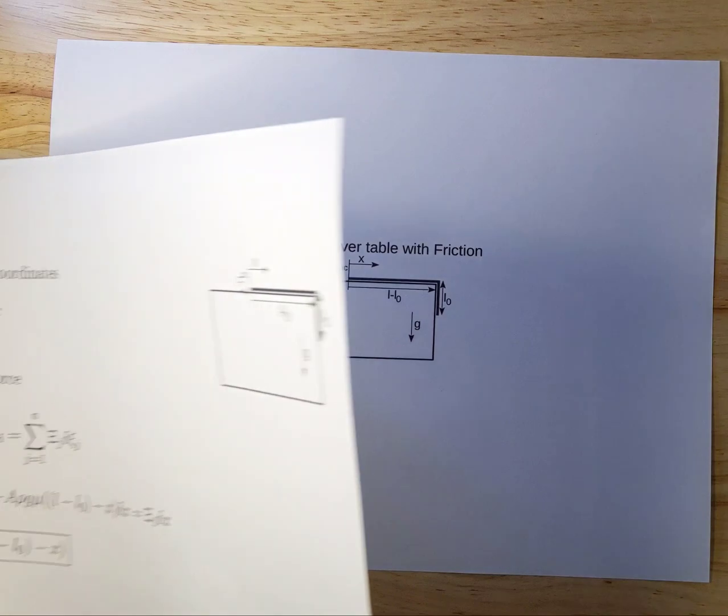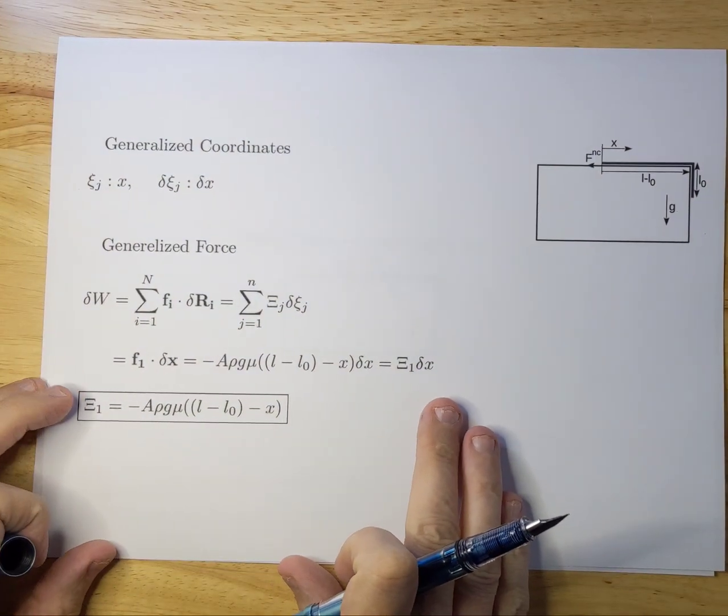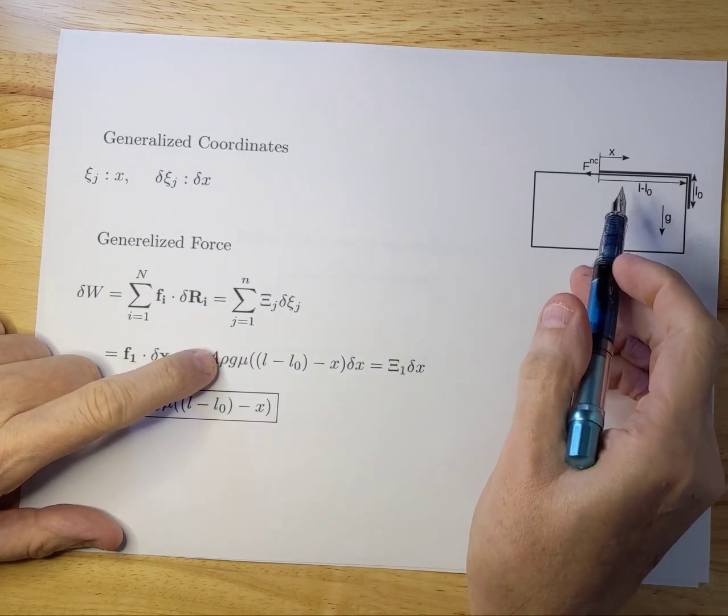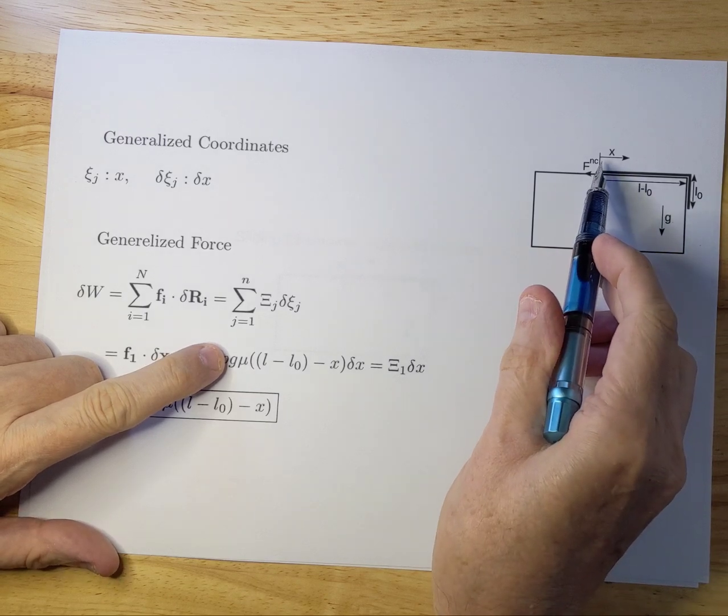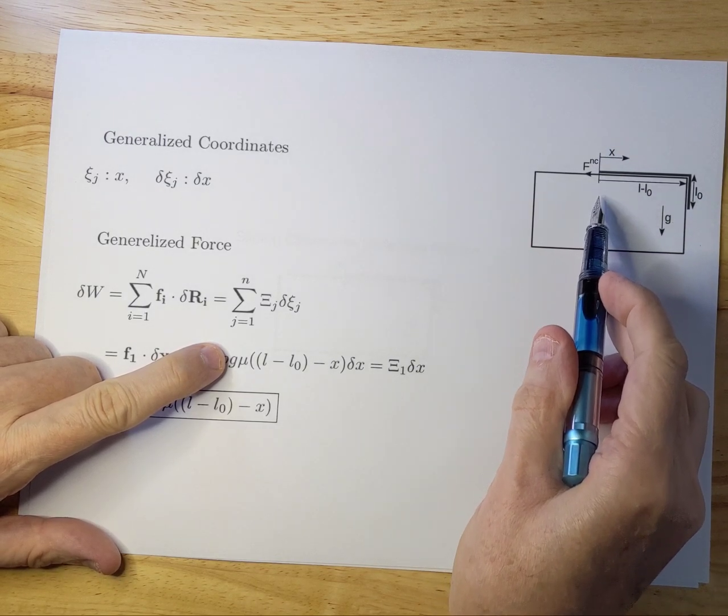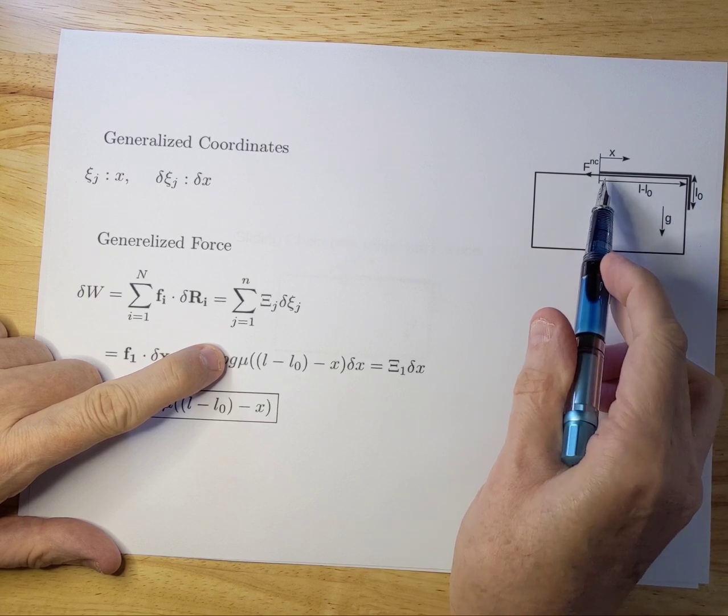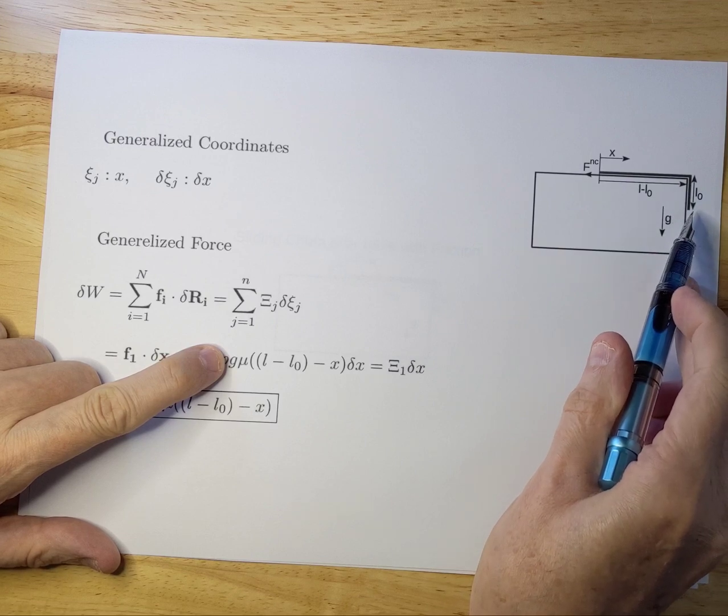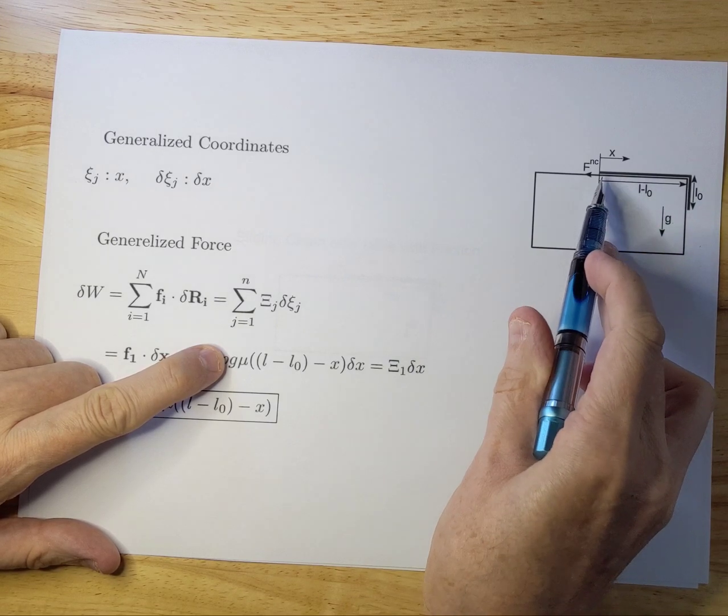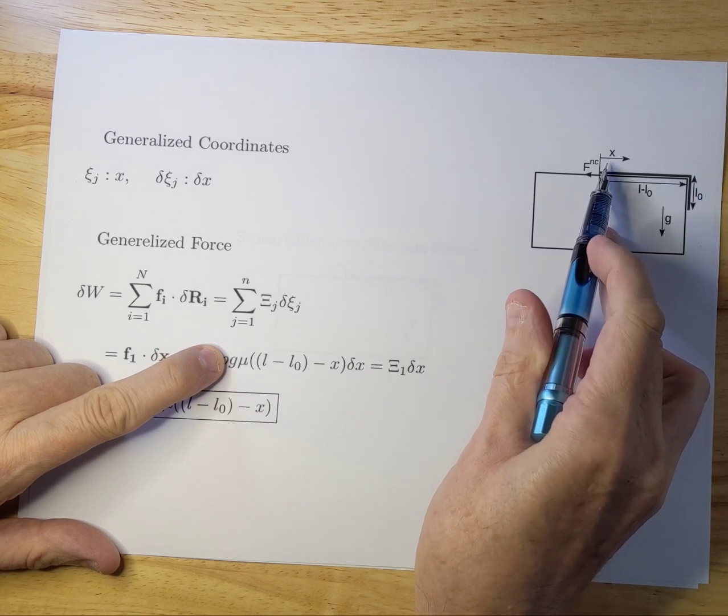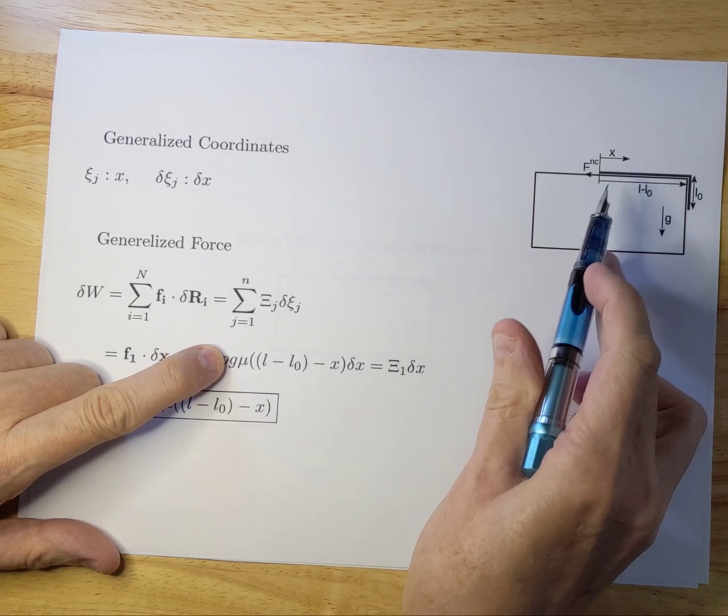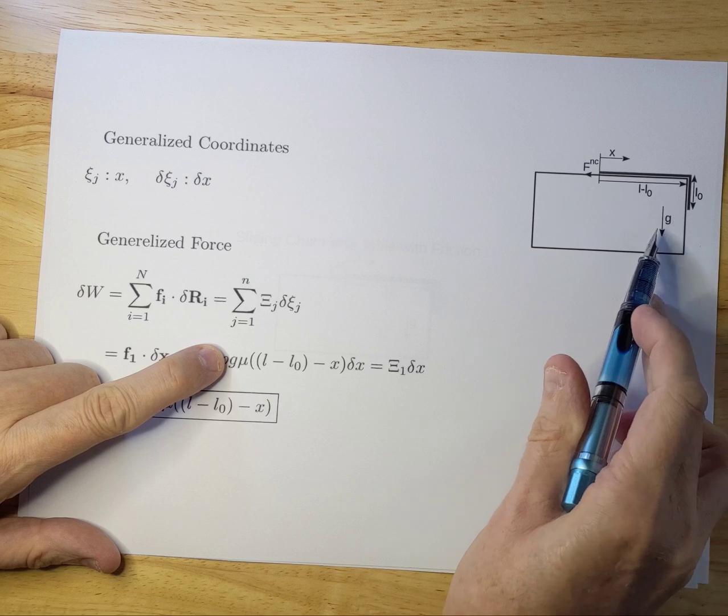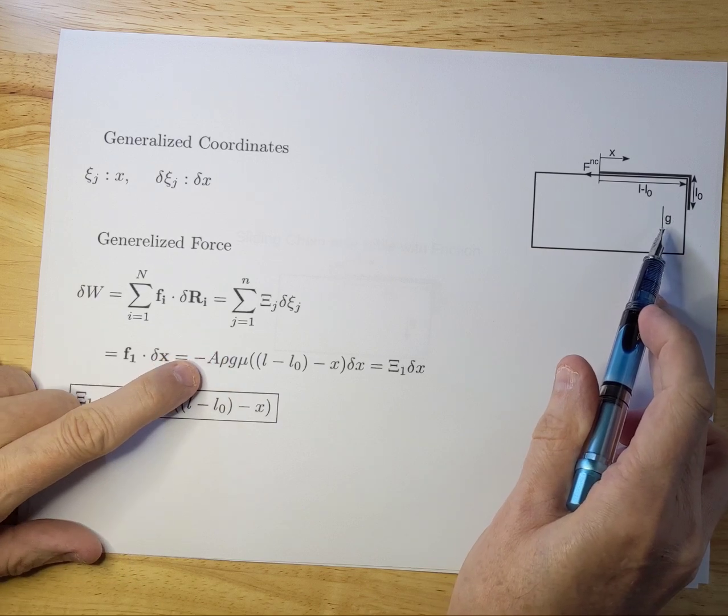I'm going to solve this using Lagrangian method. So the first step we need to go through is find out what the generalized coordinates will be. And there's essentially only one coordinate. So I set x equals 0 over here when the chain is at L minus L0 on the table and L0 off the table. The total length of the chain is L. And the generalized coordinate is essentially set as x, so it will follow the movement of the chain.